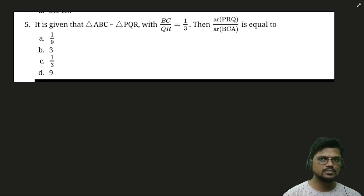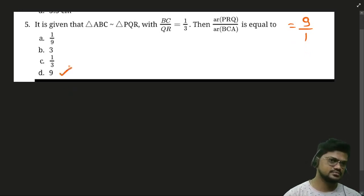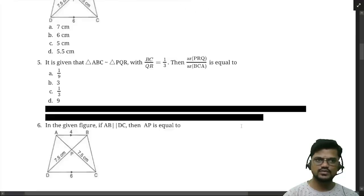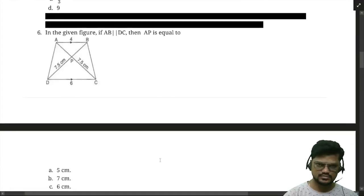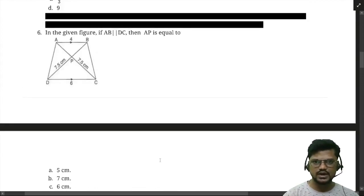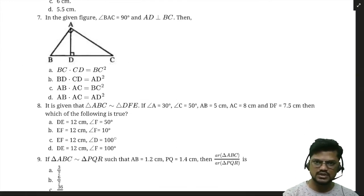The answer to the areas question is 9:1, which can also be written as 9. For question 7 — in the given figure, AB is parallel to DC — please solve this question; it is almost the same kind of question.